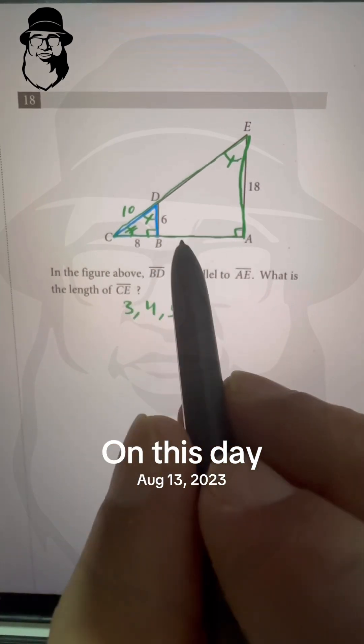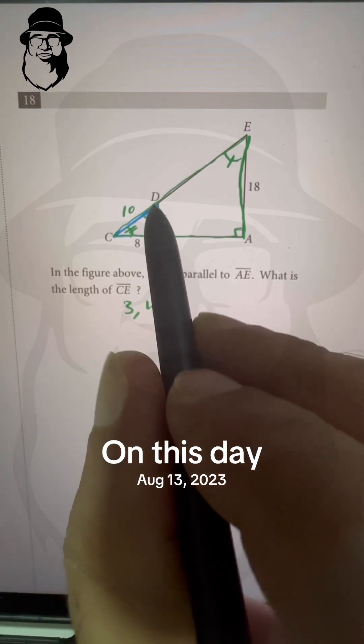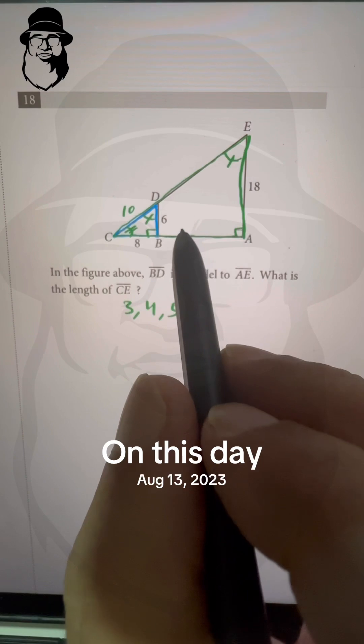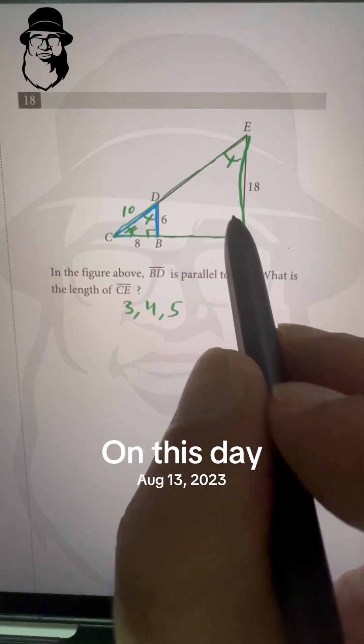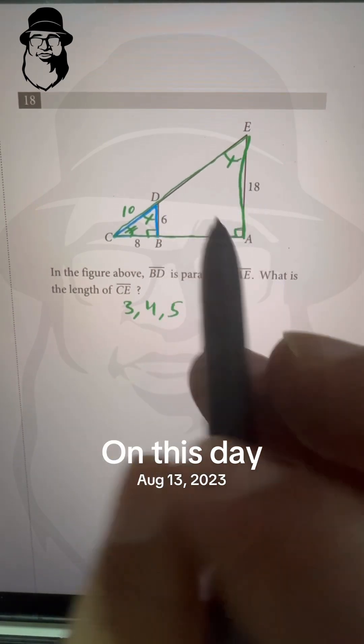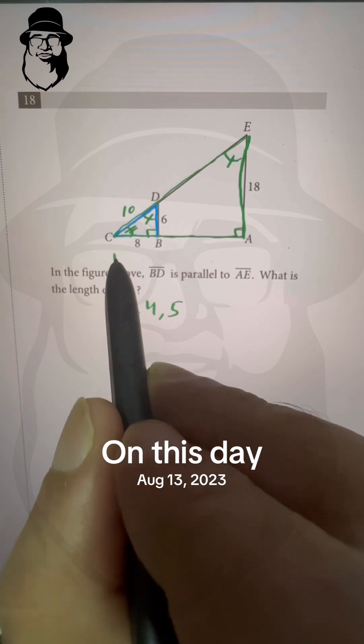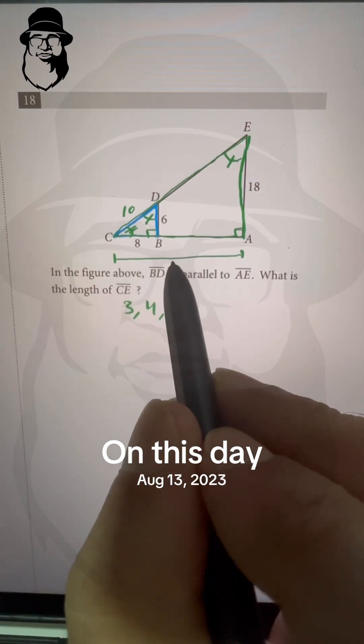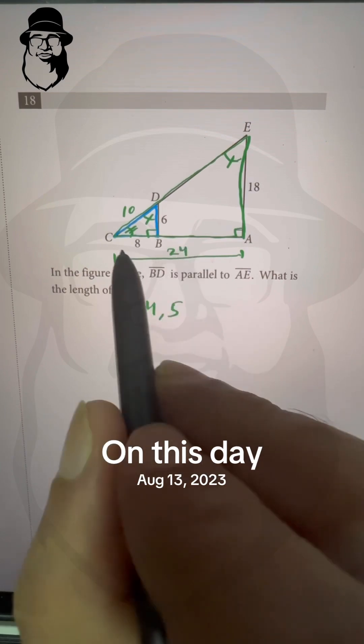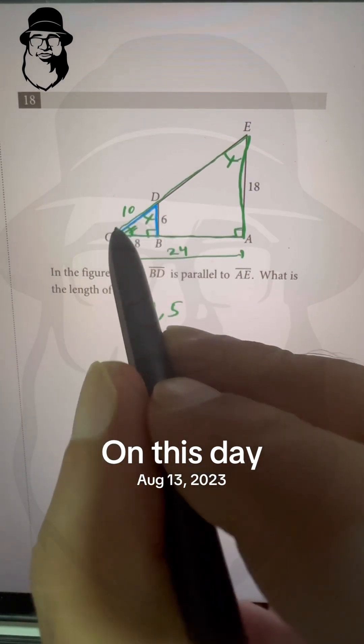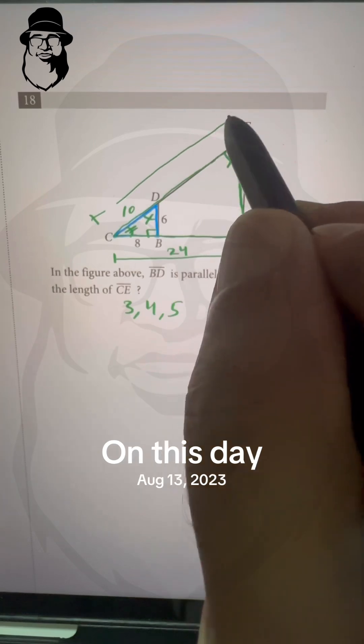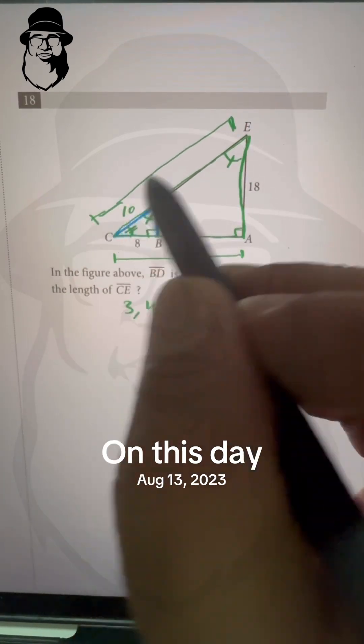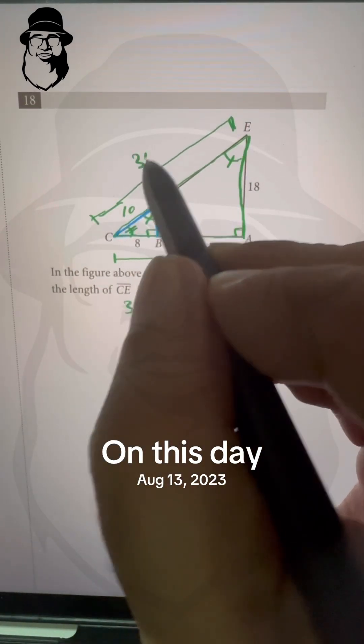And in similar triangles, the ratio of corresponding sides is same. If this is 6 and this is 18, 6 times 3 is 18. Now this 8 must be times 3, 8 times 3 is 24. This length must be 24 from A to C. And if this is 10, from here to here, this must be 10 times 3, that is 30.